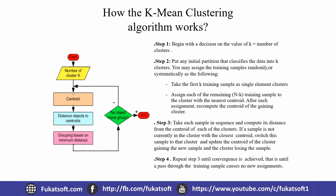Define the number of clusters, then compute the centroids — centroid means the mean center. Set these as the initial centroids, then calculate the distance from each object to each centroid. The objects closest to a centroid are grouped into that cluster.